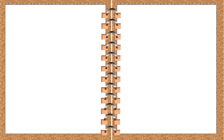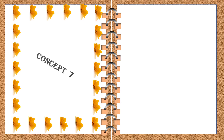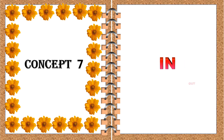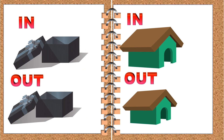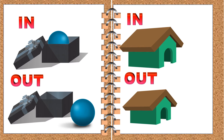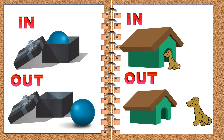Our last concept for today is in and out. Let's look at the examples. This ball is in the box. This ball is out of the box. This dog is out of the house. This dog will now move into the house. Now this dog is in the house. In and out.